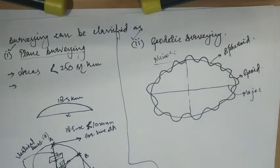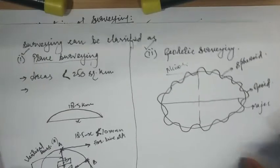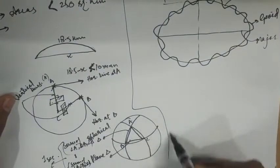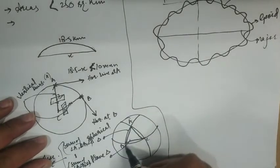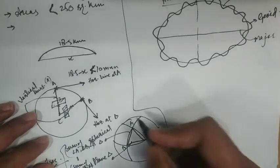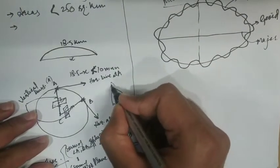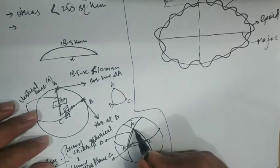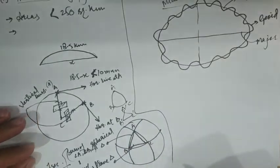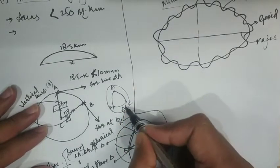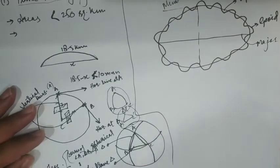Thirdly, the difference between the sum of the angles of a spherical triangle having an area of 200 km² on the earth's surface and that of the corresponding angles of the plane triangle is only one second. From the diagram, the spherical triangle ABC drawn on the earth's surface corresponds to the plane triangle A'B'C' drawn within it, and the difference in the sum of their angles should be one second. This is the third criterion for plane surveying.